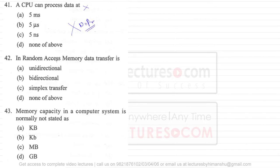Now let us look at question 42. It says: in Random Access Memory data transfer is—Random Access Memory is also called RAM. In case of RAMs, you can transfer data from main memory to RAM or from RAM to main memory, as well as from RAM to CPU or CPU to RAM. So random access memory is bidirectional—it is not unidirectional, it is not simplex transfer, it is bidirectional.